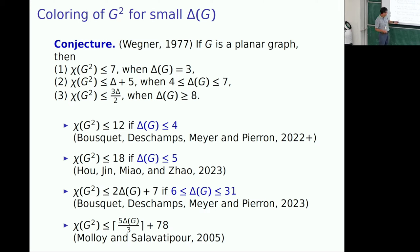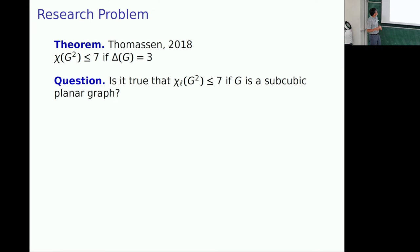And, for general case. Then, conjecture ratio is three over two. And, then, Molloy and Salavatipour prove five over three. And, this paper, appeared in JCTB.